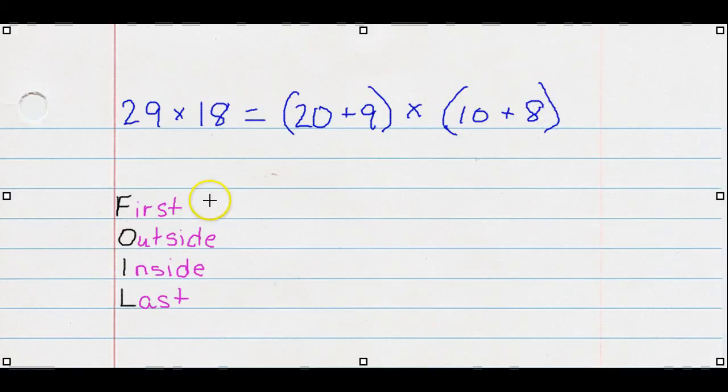Now, I have the FOIL listed here. First, that's 20 and 10. That gives us 200. Outside, that's our two outside numbers. 20 plus 8. That gives us 160.